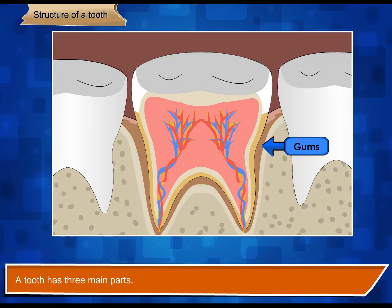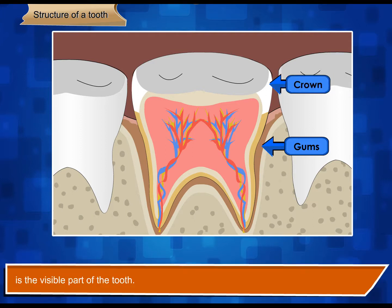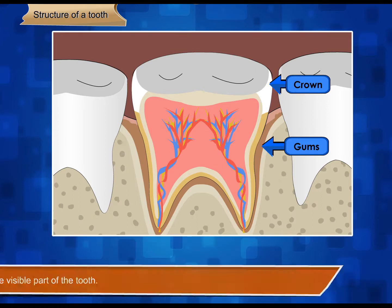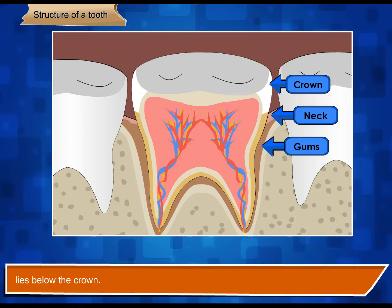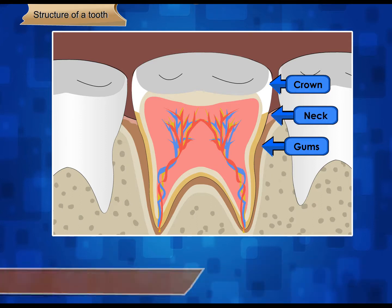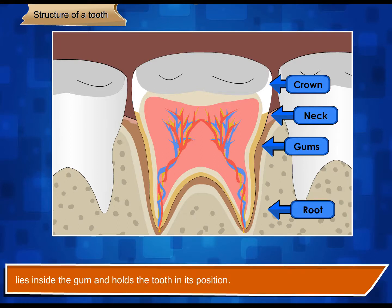A tooth has three main parts. Crown is the visible part of the tooth. Neck lies below the crown. Root lies inside the gum and holds the tooth in its position.